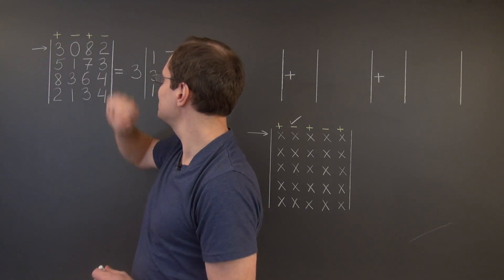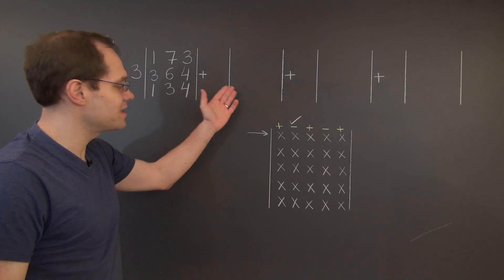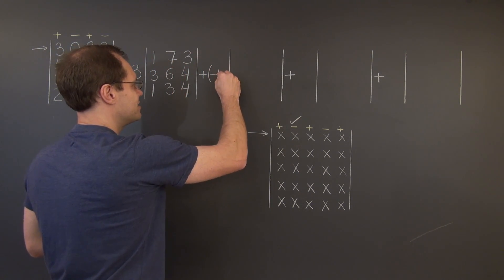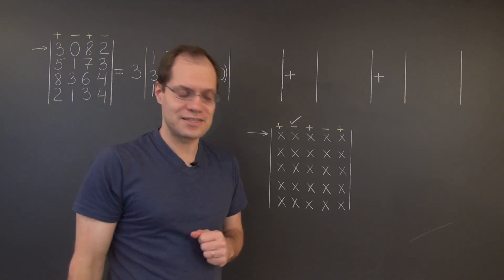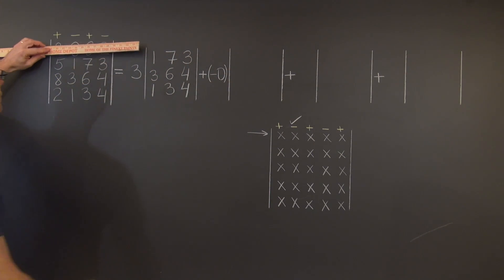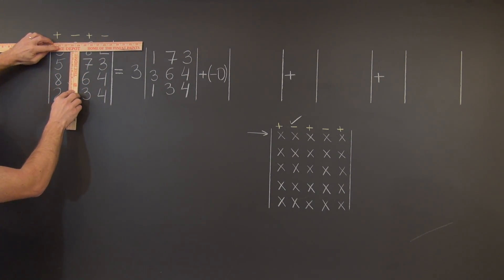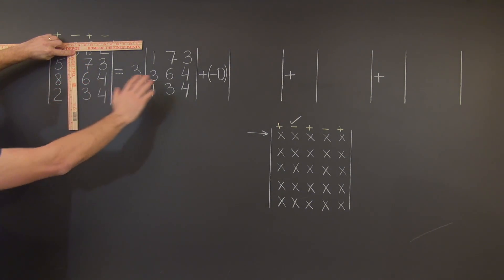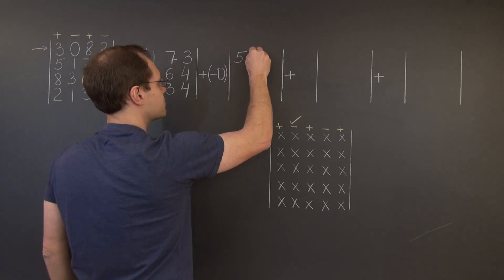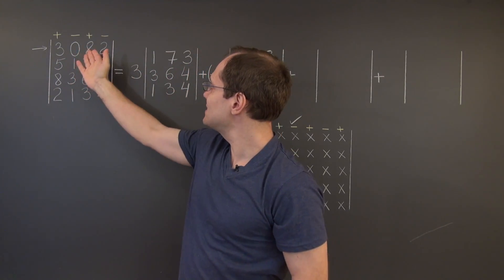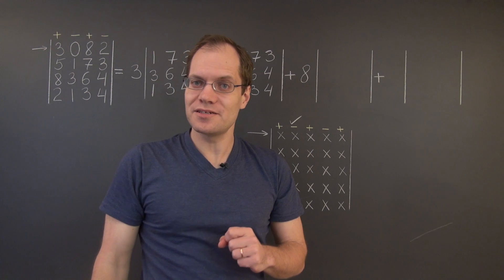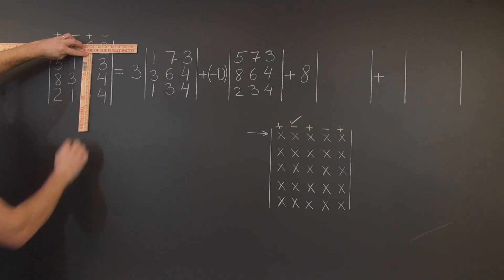Next comes this entry. Even though it's 0, which means that eventually this term will drop out, we'll write it down for completeness. This one comes with a minus sign — minus 0 — and let's see what the cofactor is. Once again we have to cross out the first row and now the second column. Take a careful look at what we're left with, and I will now write this 3 by 3 determinant here. Next is the 8, which comes with a plus sign. Let's find the corresponding cofactor.